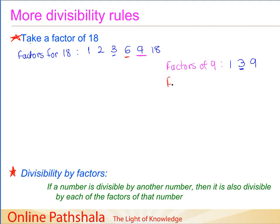Let us find the factors of 6. The factors of 6 are 1, 2, 3, and 6. Now let us see whether these factors of 6 are also factors of 18. Yes, you can straight away see that 1, 2, 3, and 6 itself are all factors of 18.